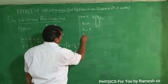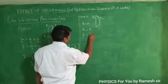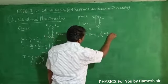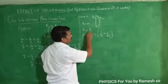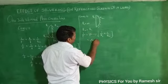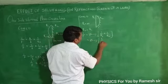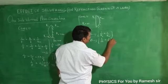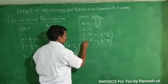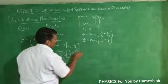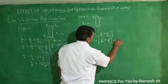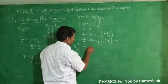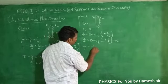So 1/f = (μ - 1) into (1/r1 + 1/r2). Substituting r1 = infinity and r2 = r, we get (μ - 1) into (1/infinity + 1/r), which gives 1/f = (μ - 1)/r. This is equation number 1. The effective focal length formula is 1/F = 2/f + 1/fm.